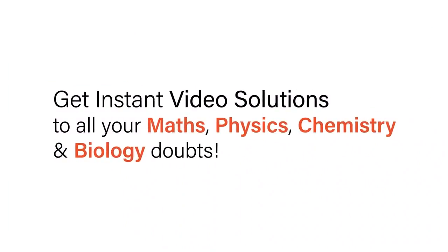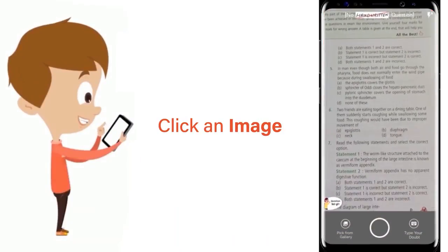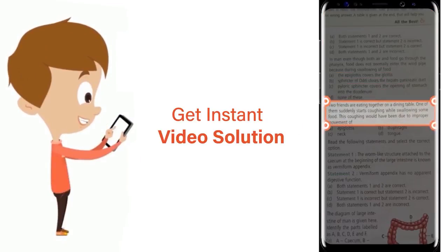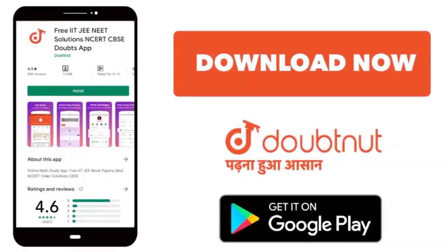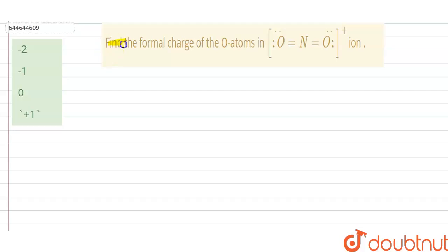With Doubtnet, get instant video solutions to all your math, physics, chemistry, and biology doubts. Just click the image of the question, crop the question, and get instant video solution. Download Doubtnet app today. Hello, so our question is find the formal charge of oxygen atoms in an O2+ ion.